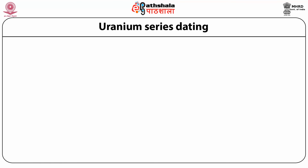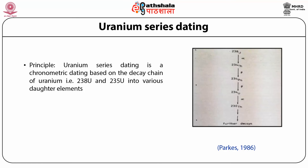Uranium series dating is based on the decay chain of Uranium-238 and Uranium-235 into various daughter elements, and is widely used for dating fossils. Different sets of daughter isotopes are used for dating, such as Thorium-230 to Uranium-234 or Uranium-234 to Uranium-238. The thorium-uranium method is widely used to date hominid sites that contain ancient rocks, stalagmites, bones, teeth, shell, and calcium carbonate deposits.